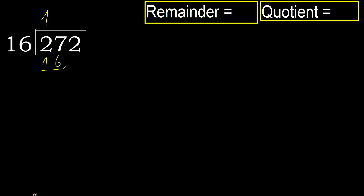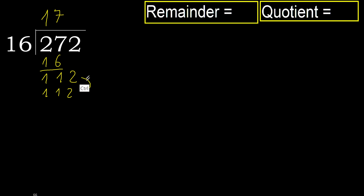16 is not greater, ok. Subtract, next. 112. 16 multiplied by 8 is 128, which is greater. 16 multiplied by 7 is 112. Ok, 112 is not greater. Subtract — 0.